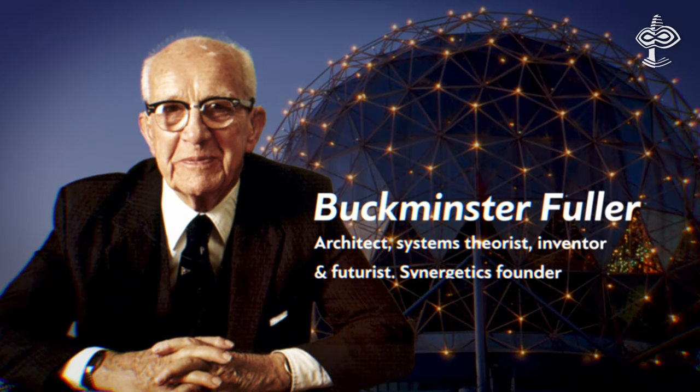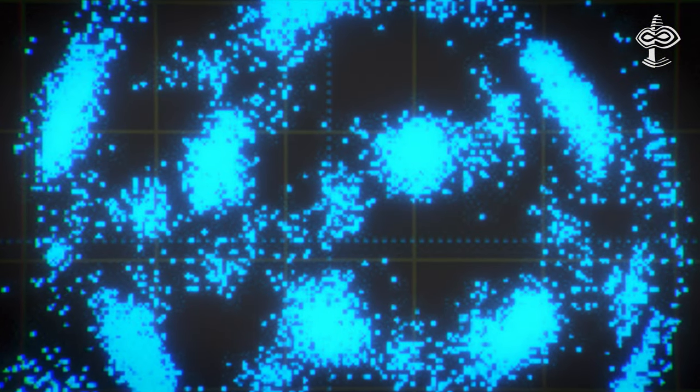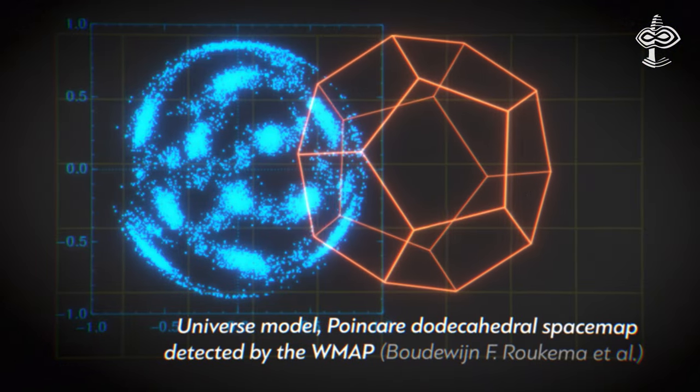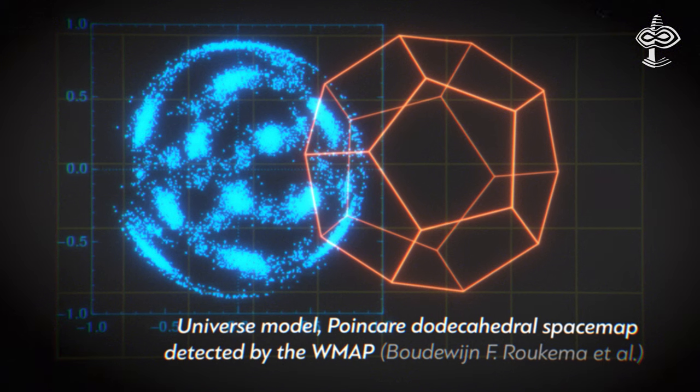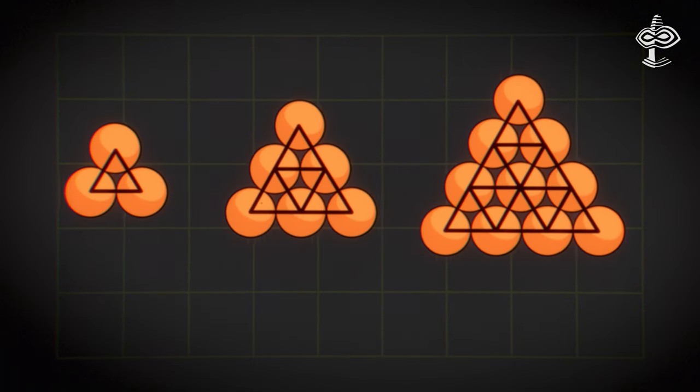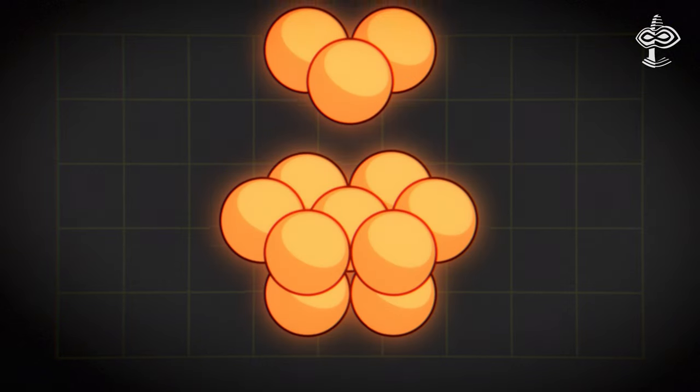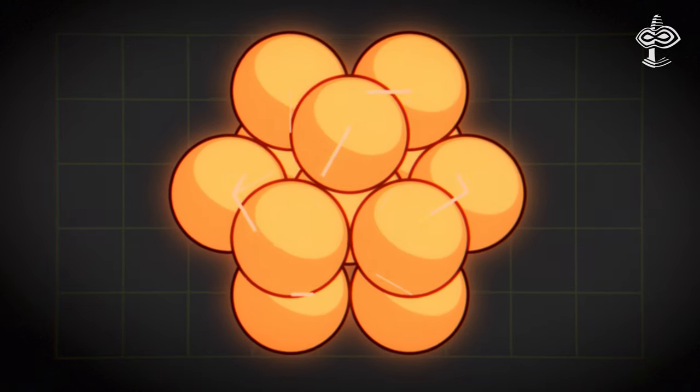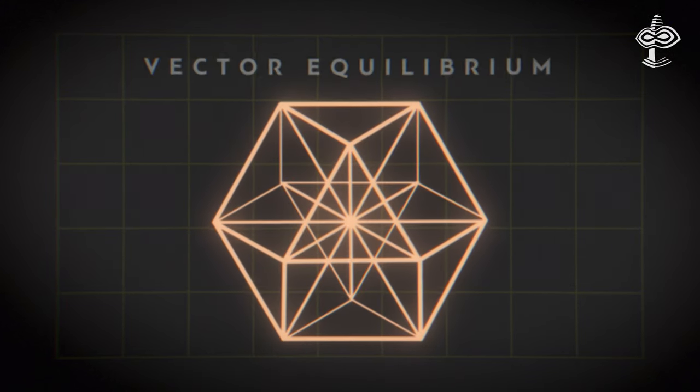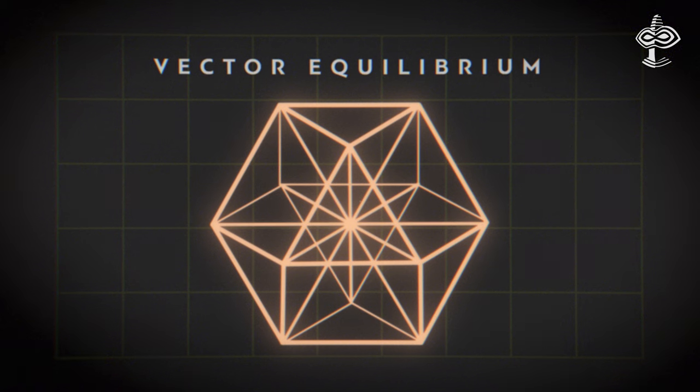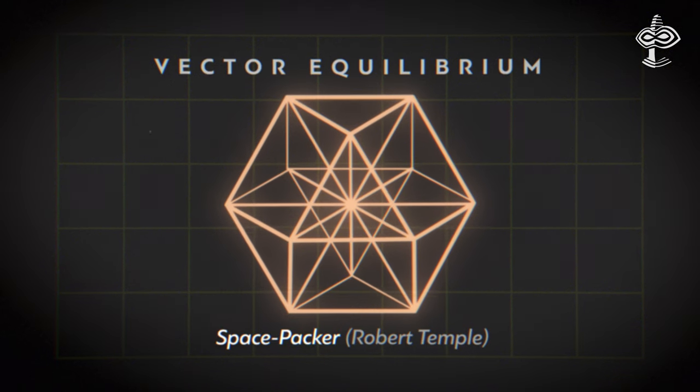These were researched by Buckminster Fuller, an architect, systems theorist, inventor, and the father of synergetics, an interdisciplinary science that presents a view of the universe as an interconnected dynamic system. Fuller was particularly interested in how nature employs the most efficient ways to structure matter and energy, which led him to the discovery of a shape he called the Vector Equilibrium, also termed Space Packer by Robert Temple.